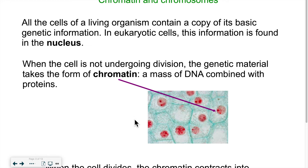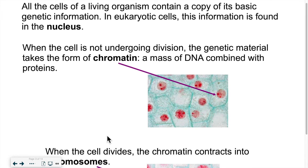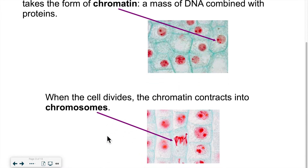When cells constantly divide, the genetic material inside them takes the form of chromatin. What is chromatin? It's a mass of DNA combined with proteins. You can see the darker area in each cell — that's where you would find the chromatin, where the DNA is. When those cells divide, the chromatin contracts and forms what we call chromosomes.